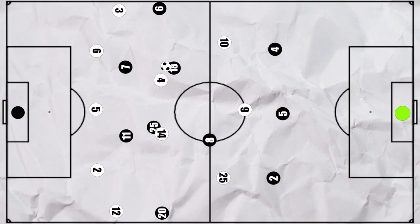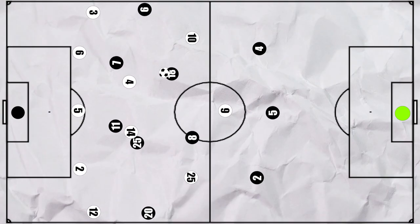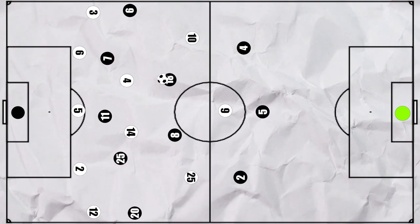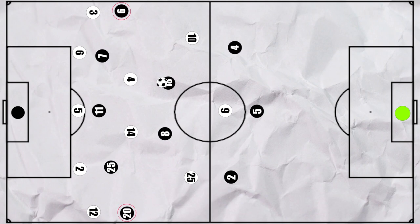But Southgate should also be credited for his tactical switch to a back five, as Gosens and Kimmich as the wing backs had been Germany's biggest threat. Having wing backs of their own allowed England to almost completely neutralise this.